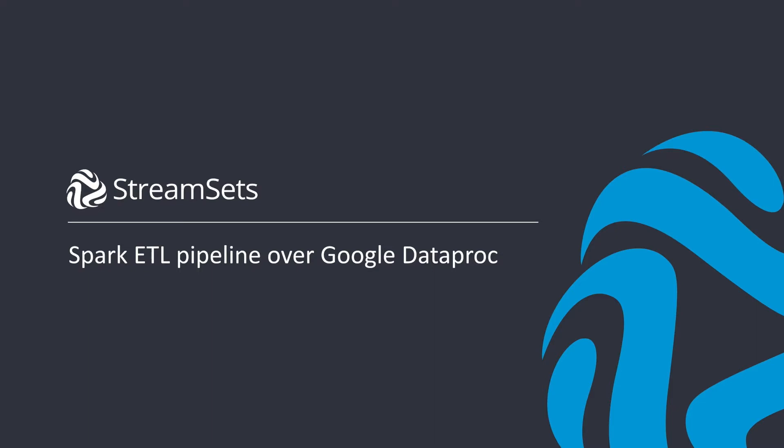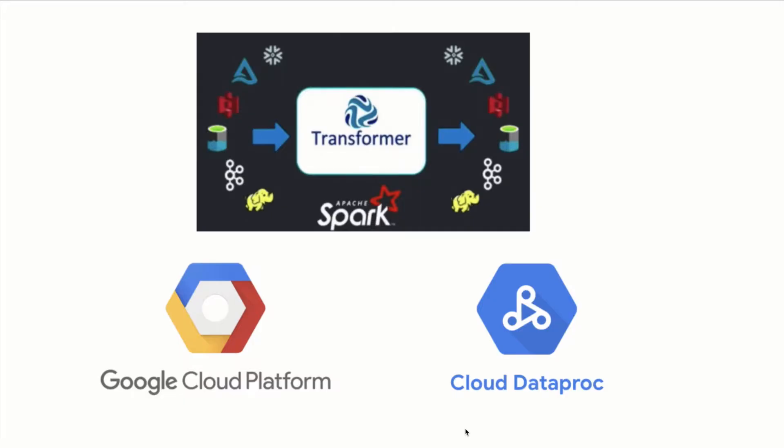In this video we are going to learn how to run a Spark ETL pipeline over Google Dataproc. StreamSets Transformer is an execution engine that allows us to create a data processing pipeline that executes on a Spark cluster. With the simple use of a drag-and-drop UI, we can create a pipeline for performing ETL and stream processing.